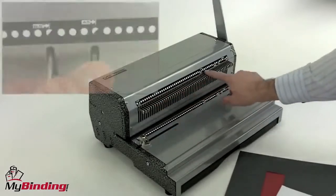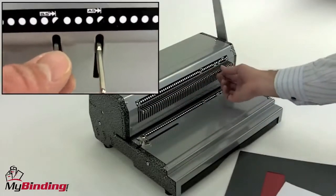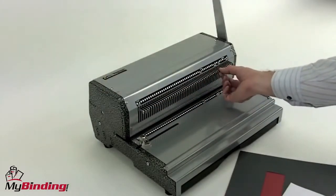Let's watch it in action. A full row of disengageable die pins allows you to punch virtually any size sheet of paper and ensure that there are no half holes.